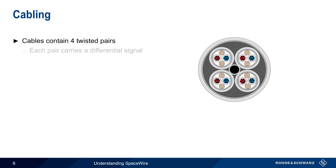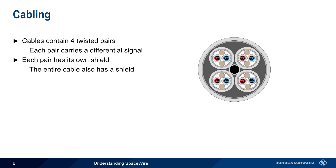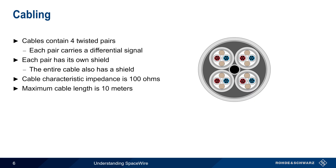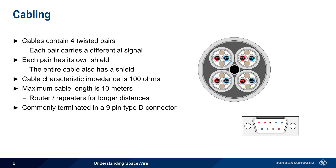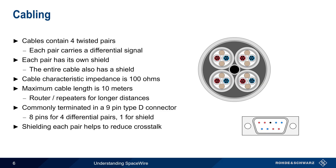Next, we'll look at cabling. SpaceWire cables contain four twisted pairs, each carrying a differential signal. Each of these pairs is shielded, and the entire cable also has its own shield. The construction of this cable causes it to have a characteristic impedance of approximately 100 ohms. Maximum cable length is 10 meters, which is usually sufficient for most spacecraft, but routers or repeaters can also be used to extend this maximum length. In most cases, these cables are terminated in a 9-pin microminature D-type connector, with eight pins assigned to the four differential pairs and one pin connected to the shield. Note that shielding each pair of cables helps to avoid crosstalk between them, which also helps in meeting the EMC requirements for spacecraft.